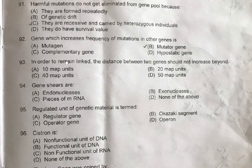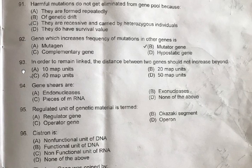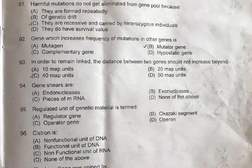Question 93: In order to remain linked, the distance between two genes should not increase beyond — A: 10 map units, B: 20 map units, C: 40 map units, D: 50 map units. The correct one is C, 40 map units. Question 94: Gene shears are — A: Endonucleases, B: Exonucleases, C: Pieces of messenger RNA, D: None of the above. The correct one is C, pieces of messenger RNA. These correspond to the coding regions of the genome.